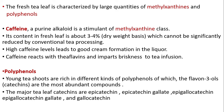Caffeine is a methylxanthine, a purine alkaloid, and a stimulant. Its content in the fresh leaf is about 3 to 4%, which cannot be significantly reduced by conventional tea processing. High caffeine levels lead to good cream formation in the liquor. Caffeine reacts with theaflavins and imparts briskness to tea infusion.